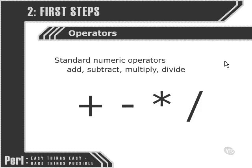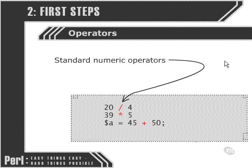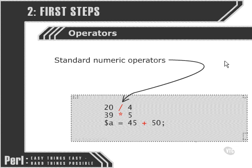We also have access to all the standard numeric operators we'd expect: addition, subtraction, multiplication, and division. It may look a little different from mathematics — the plus and minus signs are very similar, but the multiply sign is more like an asterisk and the divide sign is a slash. They all do exactly the same thing as we'd expect — for example, 20 divided by 4. We can use these in combination with other operators, for instance to set the value of variable a to 45 plus 50.